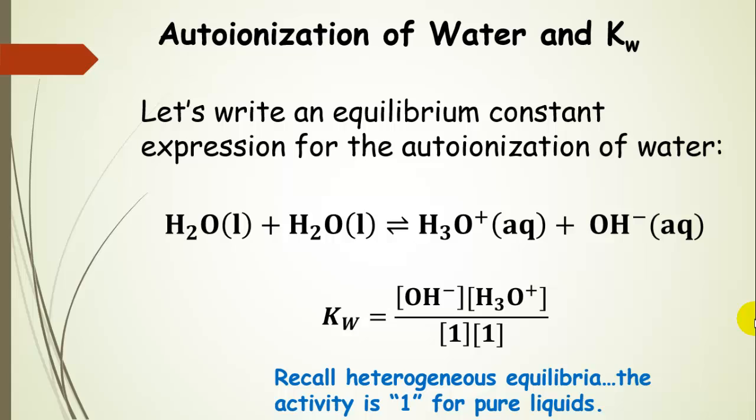Now let's go ahead and write an equilibrium constant expression for this auto ionization of water. This is a reminder of what we did in the equilibrium chapter. Here we have water reacting with itself, and it's in equilibrium with hydronium and hydroxide. Remember when we write an equilibrium expression, we're going to have the products over the reactants. So hydronium and hydroxide are the products. The coefficient is one for each of those. And then remember, for pure liquids and pure solids, the activity is one. So I put those in there explicitly, but we often leave them out. And that's from our heterogeneous equilibria discussion.